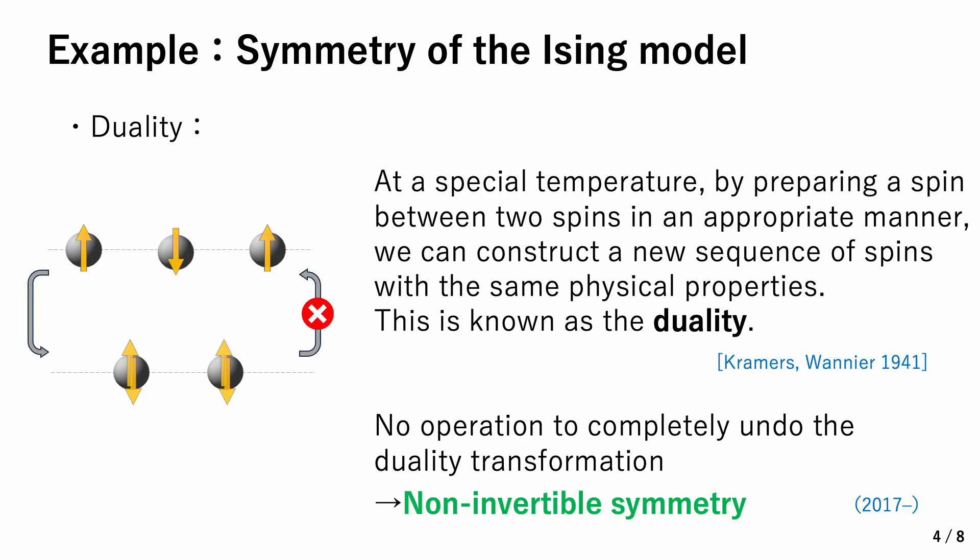Next, let's discuss duality. At a special temperature, by preparing a new spin between two old spins in an appropriate manner, we can construct a new sequence of spins with the same physical properties as the original one. This is known as duality, and it was introduced in 1941. There is no operation which completely undoes the duality transformation. Therefore, this duality can be considered as an example of a non-invertible symmetry. This was noticed only recently.